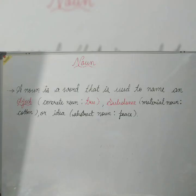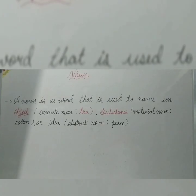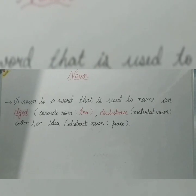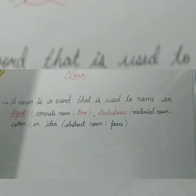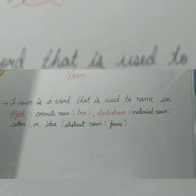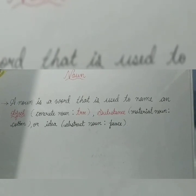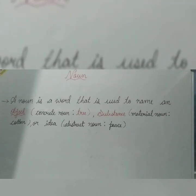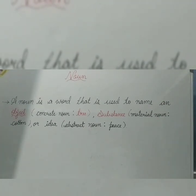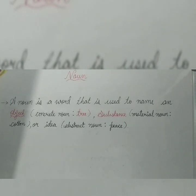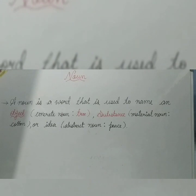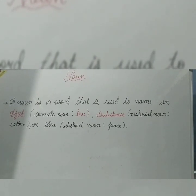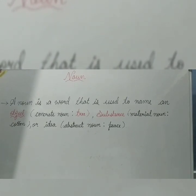Another definition of noun is: a noun is a word that is used to name an object, substance or idea. You can choose any one definition if you want to. If you are unable to learn both of them, you can write one on your own. And even if you have any other definition which you think is more simple, you can also write it. But remember, it should be correct.